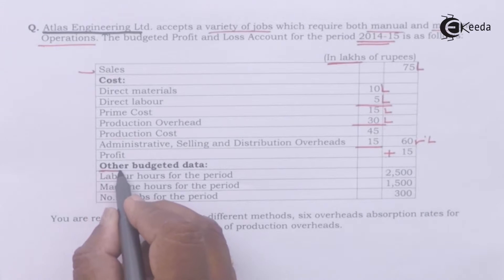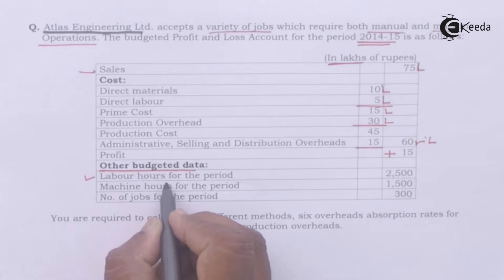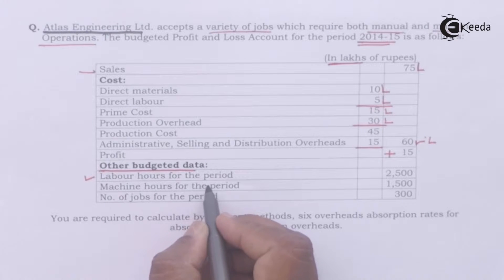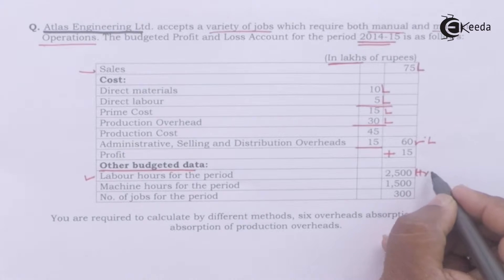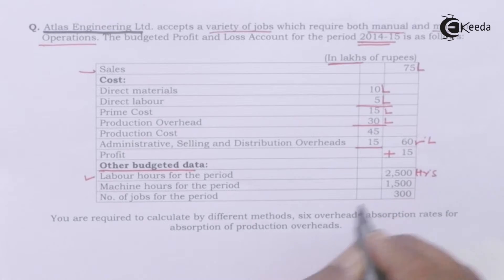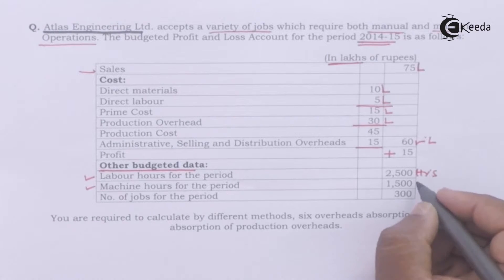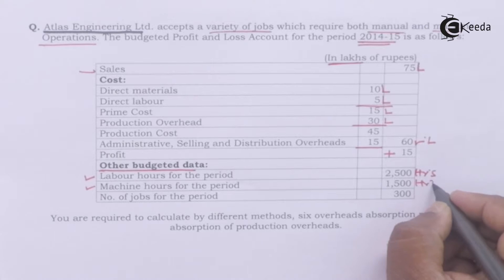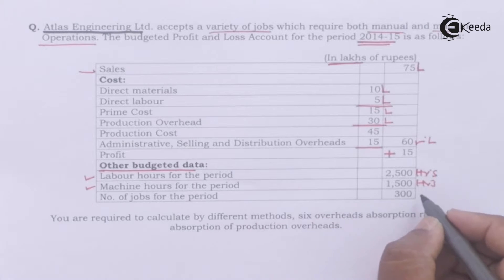Other budgeted data: labor hours for the period 2,500 hours, machine hours for the period 1,500 hours, and number of jobs for the period 300 jobs.